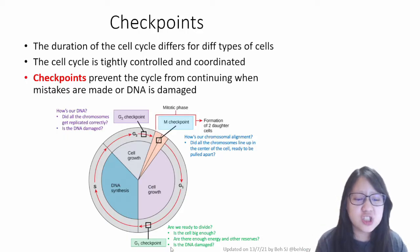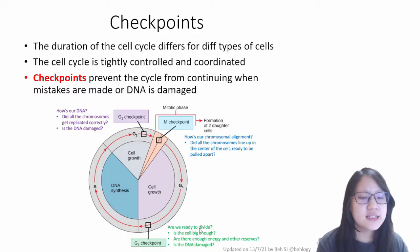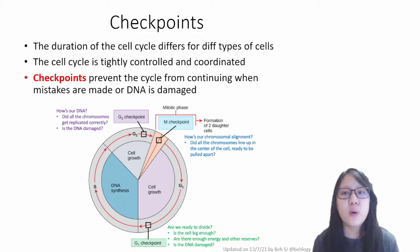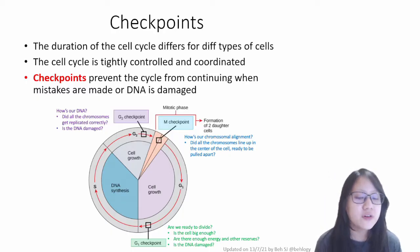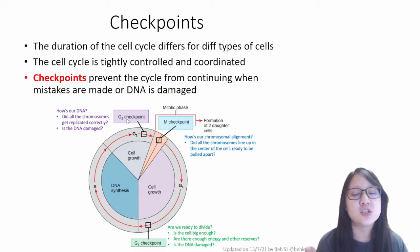Now at the end of G1, there is also another checkpoint. The cell would be looking at things like: is the cell big enough? Are there enough energy? Because mitosis and DNA synthesis actually requires a lot of resources and energy for the cell in the form of ATP, of course. There's also checking for DNA damage here, but not so much as the G2 checkpoint, maybe in different forms.